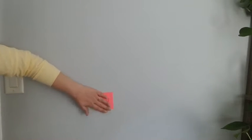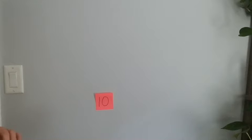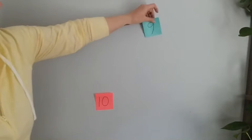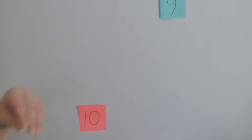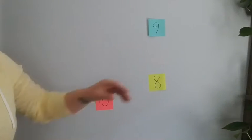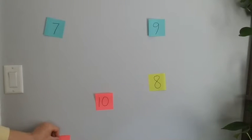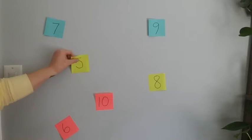To set up for the activity, take the stack of numbers from 0 to 10 and post them on the wall. I post them around randomly because I don't want them to be in a line. I want children to be looking for the number. Once you have them all set up, you're ready to go.